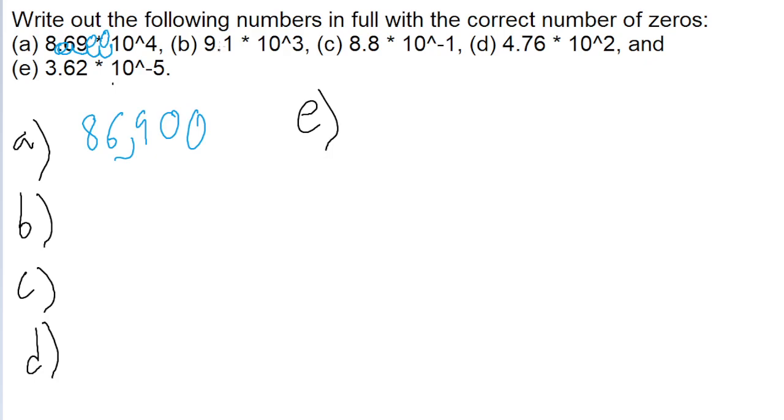And we just continue with this process throughout the rest of the parts. So 9.1 times 10 to the power of positive 3, so we move this decimal point to the right three spaces. It makes intuitive sense when you think about it, because if it's a positive number we're making the number bigger, and moving the decimal point to the right makes the number bigger because we're adding more zeros to the right side.